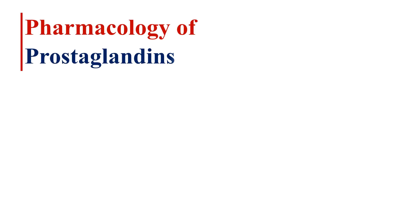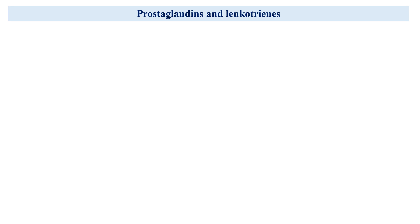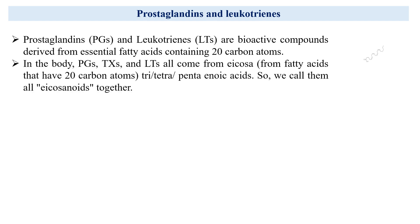Hello everyone, today we are delving into the world of prostaglandins — we will study the pharmacology of prostaglandins. Let's talk about two special things in our body: prostaglandins and leukotrienes. These are like tiny helpers made from special fats with 20 carbon atoms. In our body, prostaglandins, thromboxanes, and leukotrienes all come from something called icosanoids — fatty acids with 20 carbon atoms.